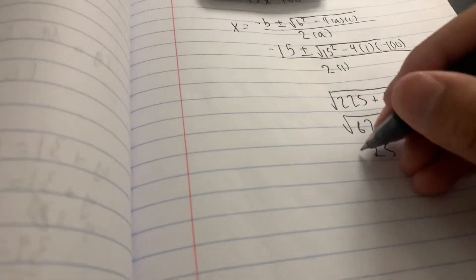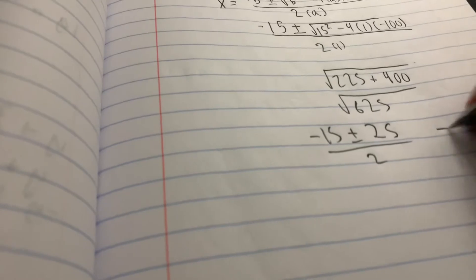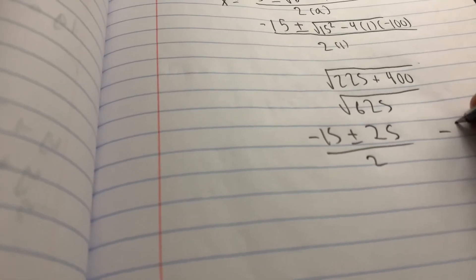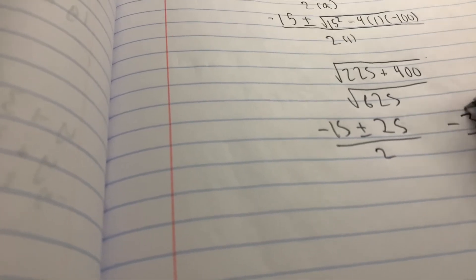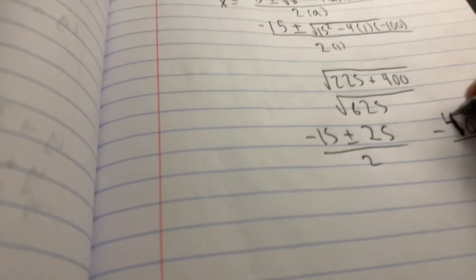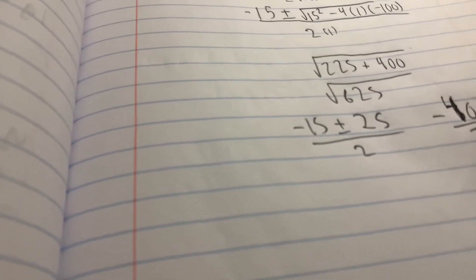So 25 is going to be negative 15 plus or minus 25 divided by 2. So let's do minus 25. That would be 30. No, 40. Right? Yeah, 40. My bad. Divided by 2, that would be negative 20.